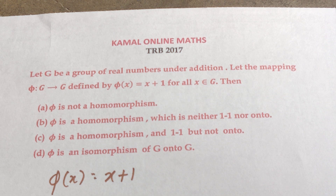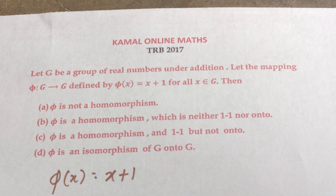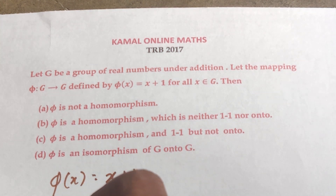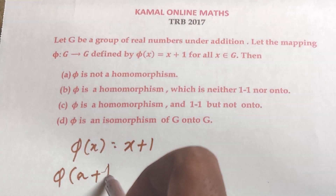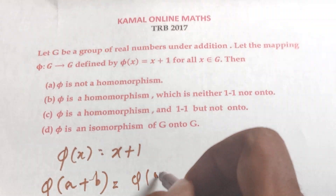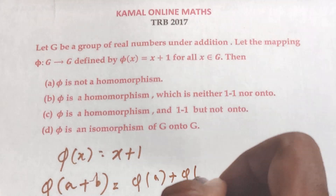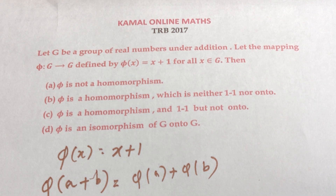To check for a homomorphism, we need phi of A plus B to equal phi of A plus phi of B. For a group with binary operation addition, the homomorphism condition requires phi of A plus B equals phi of A plus phi of B.